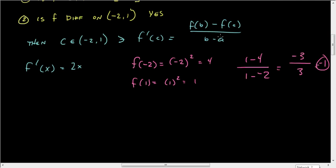And so we need to find out, that's our slope, that's the right side of the equation. So where is f'(x) equal to -1?